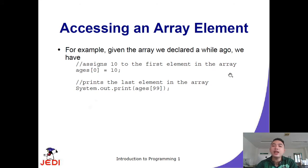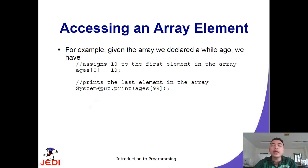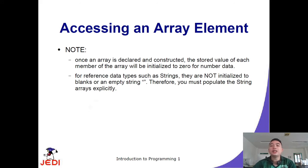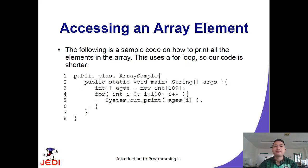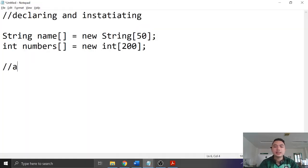For example, given the array ages, writing ages[0] = 10 assigns 10 to the first element, and ages[99] accesses the last element of a 100-element array. Once an array is declared and constructed, numeric elements are automatically initialized to zero. For reference data types such as Strings, they are not initialized to blanks, so you must populate String arrays explicitly.